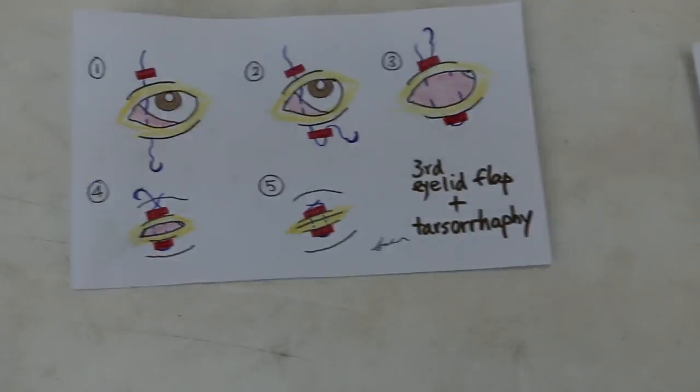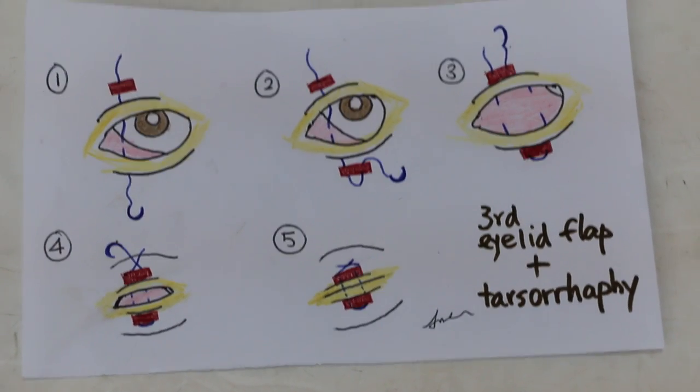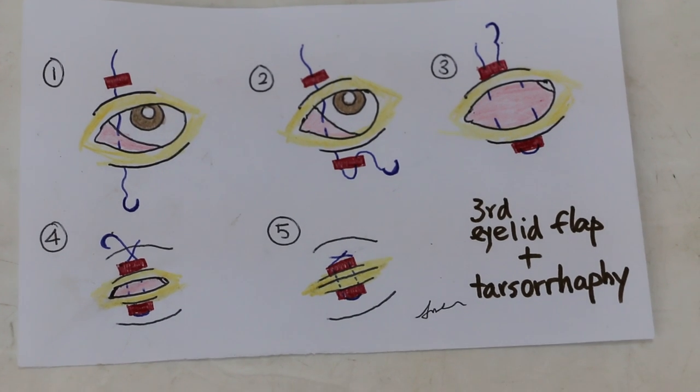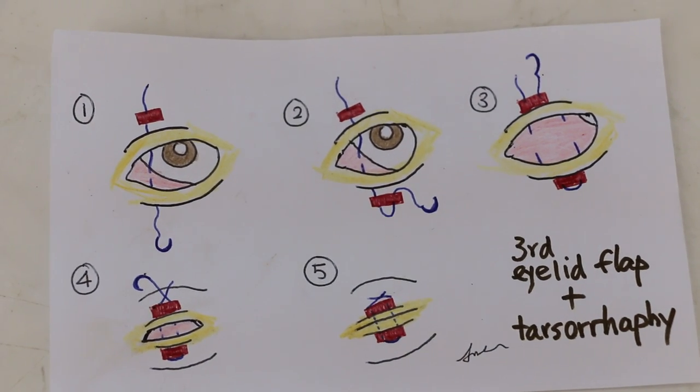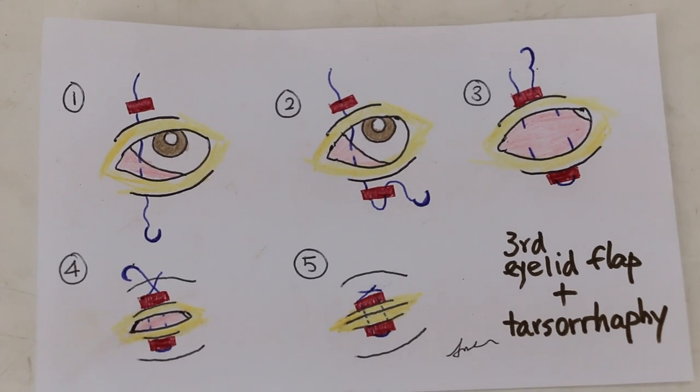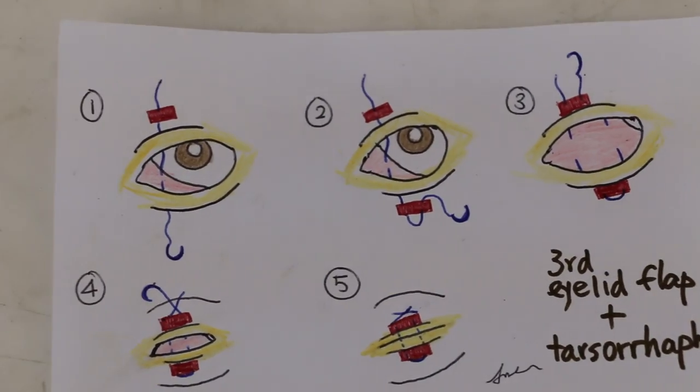So the surgery done was this surgery. This surgery is called third eyelid flap tarsorrhaphy, which is explained as putting the suture needle in. This is image one, through the stint of tubing, and then upper eyelid, then go through the third eyelid, and out from the lower eyelid. That's image one.